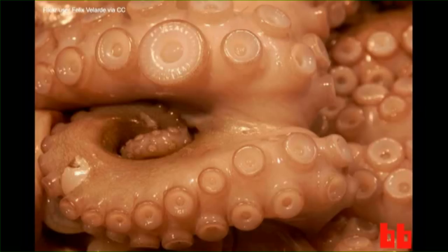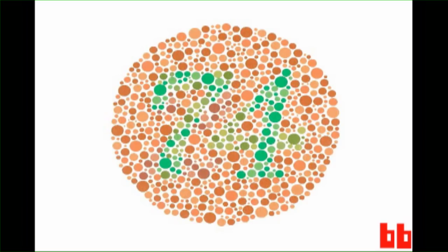Fascinatingly, this might not be the only kind of distributed processing going on in cephalopods. Think back to those camouflage abilities, especially their skill at color matching. Now consider this. Cephalopods are colorblind. So how the heck does that work?